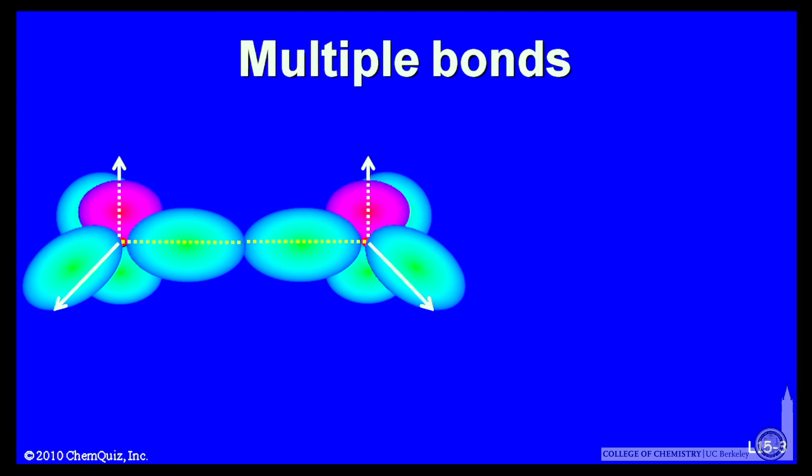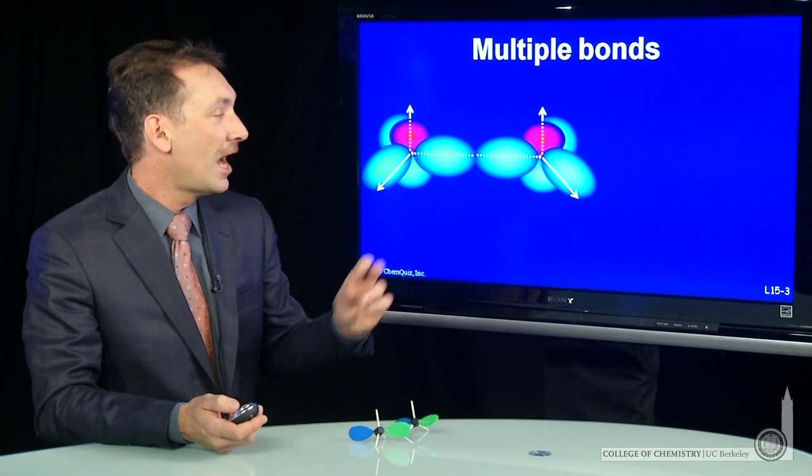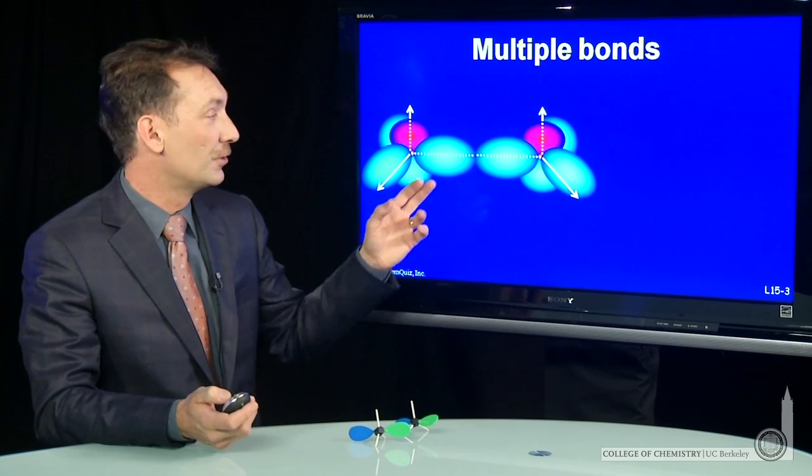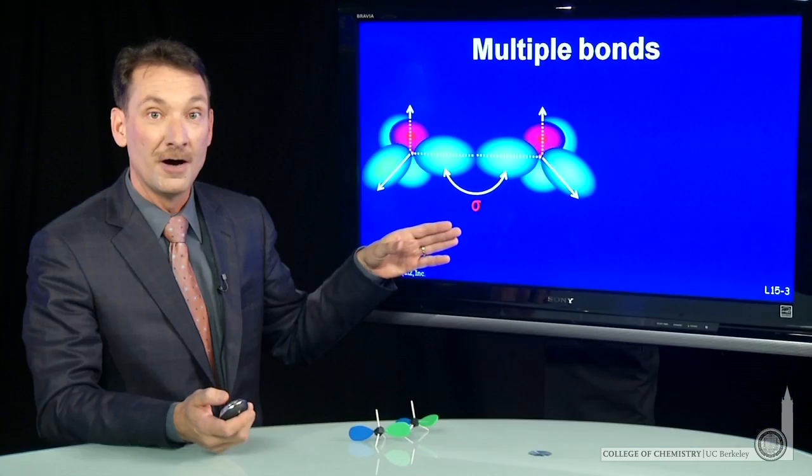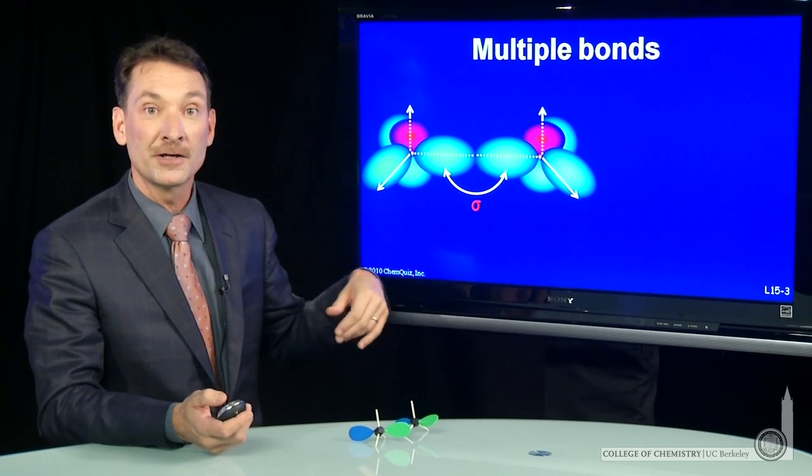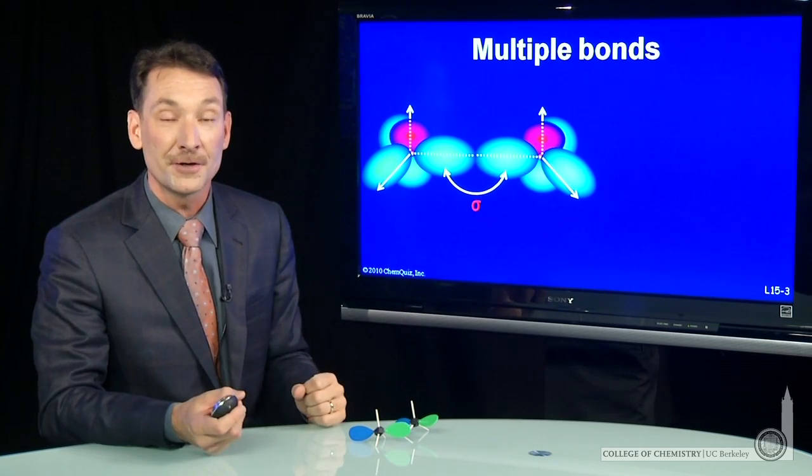And the p orbital that's still there, I'll form a sigma bond between the two carbons. The sigma bond will be formed from the overlap of an sp2 orbital on one carbon and an sp2 orbital on the other carbon.